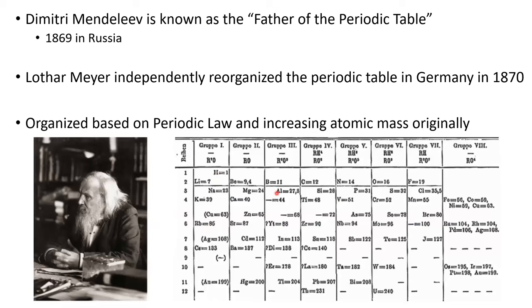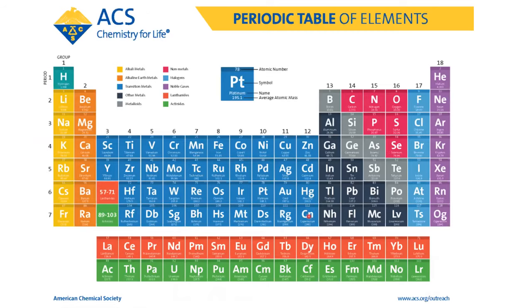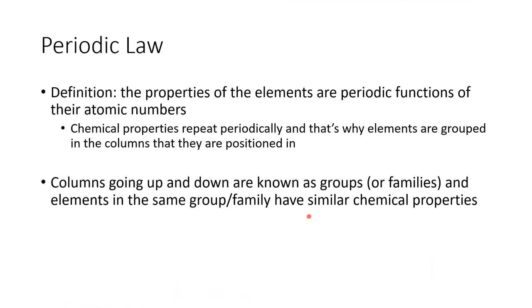In Mendeleev's periodic table, there are a couple of open spots — element 44, 66 — because certain elements hadn't been discovered at the time. But since the periodic table is grouped so that each column has similar properties, he was able to predict the properties of those missing elements. This is known as the periodic law or periodicity: the properties of the elements are periodic functions of their atomic numbers. We see these properties repeat periodically, which is why we call it the periodic table.